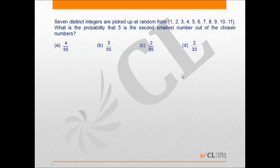This is a probability problem. We have to pick seven distinct integers out of the first 11 natural numbers and find the probability that 5 is the second smallest out of the chosen numbers.